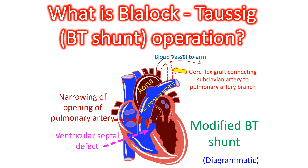A typical example is a condition known as tetralogy of Fallot, with four defects. The components are: a defect in the wall between the lower chambers known as ventricular septal defect, narrowing of the opening to the pulmonary artery known as pulmonary stenosis, thickening of the wall of the right ventricle, and overriding of the ventricular septal defect by the aorta.